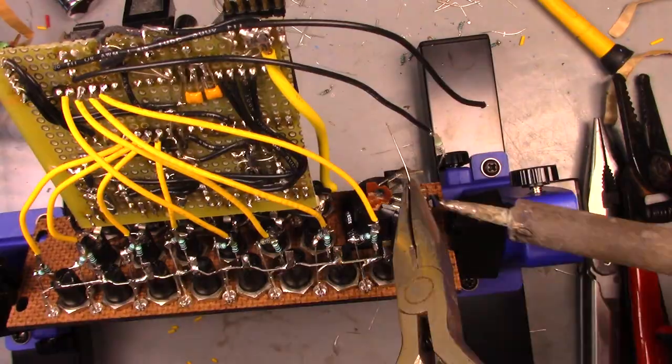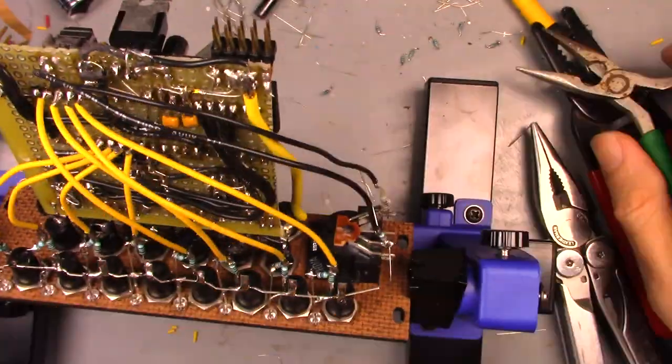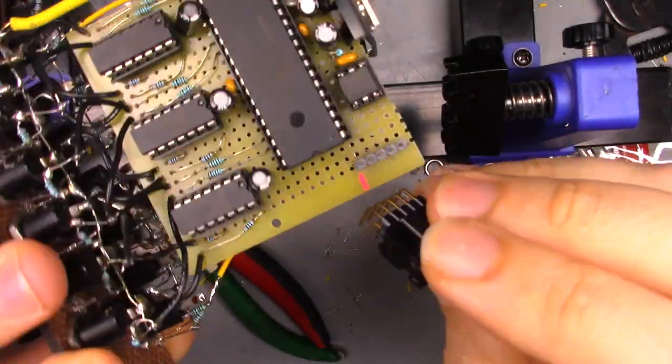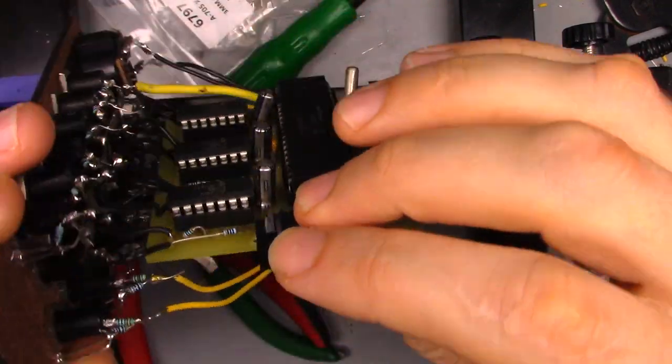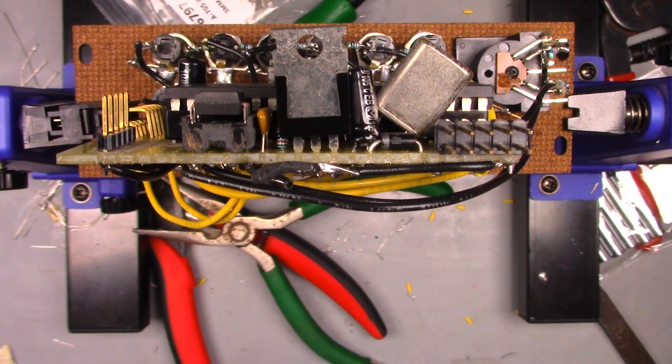And the final connection to the faceplate was the MIDI jack. Next, I wanted to add a ribbon cable connector to the circuit board so that the MIDI data could be passed to expansion boards without cables going through the front of the faceplate.